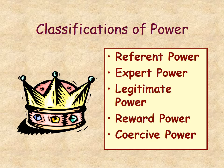Legitimate power is held by the dean, the president of the college, or the president of the United States — people who have been voted into office and given power. Reward power means that if you do a certain amount of sales you get a bigger bonus, or if you work an extra shift you get time and a half. Coercive power is the negative side of that — if you call in sick too many times, you'll get fired.